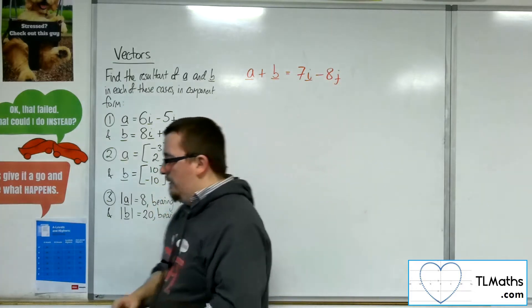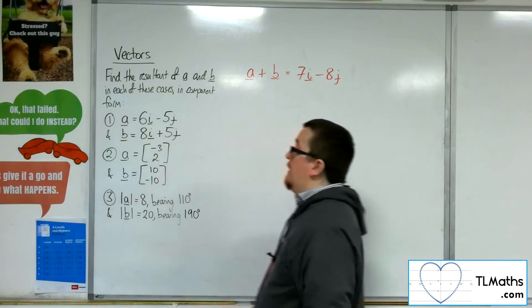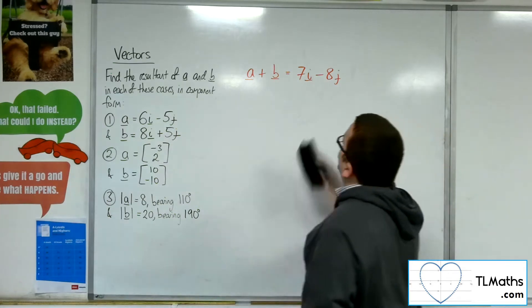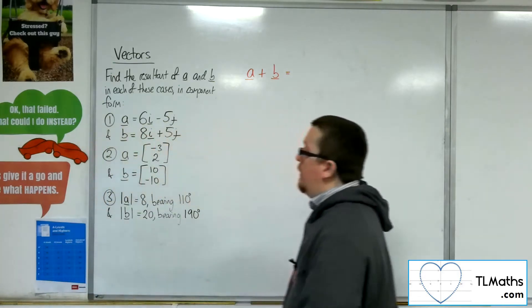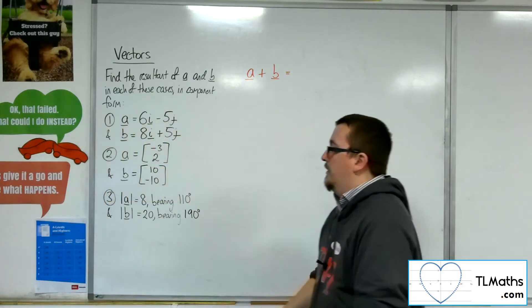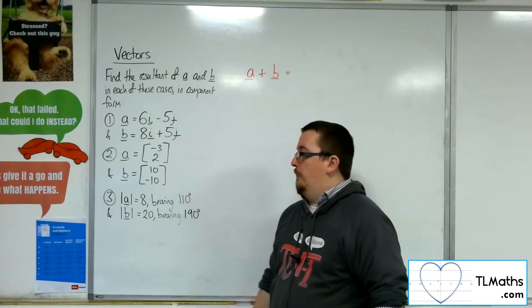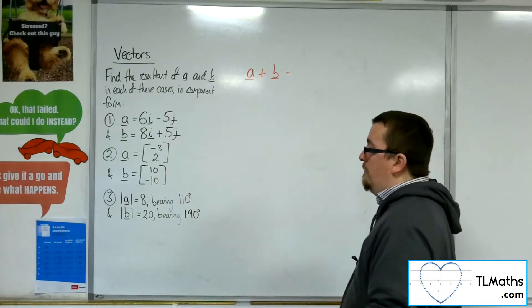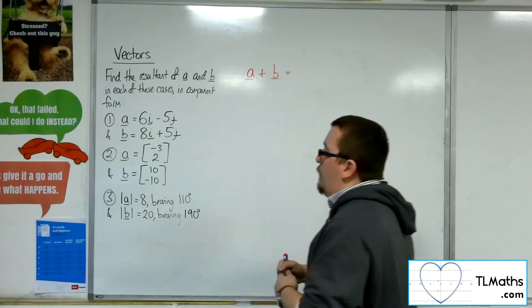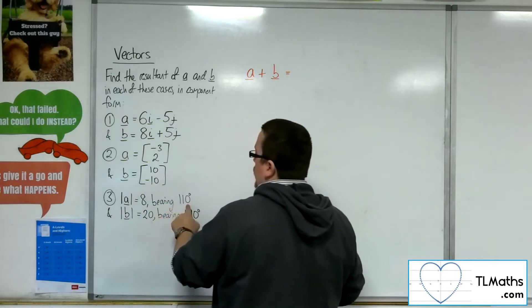So that is the resultant vector for a and b in the case of number two. Right, now for number three, I've given the two vectors in magnitude direction form, where I've given the magnitude and the bearing.